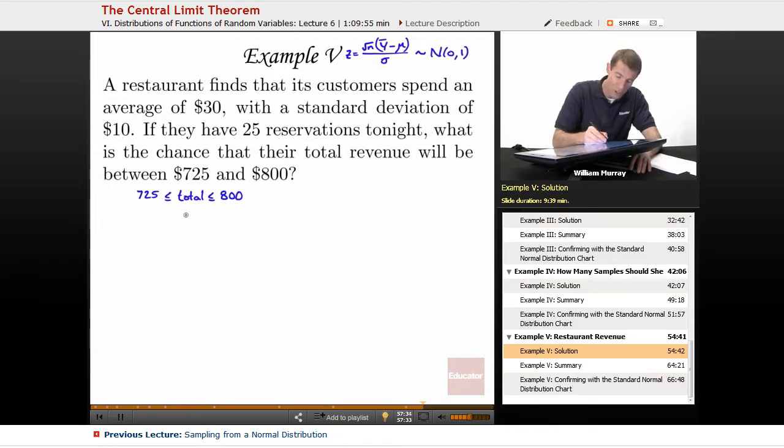So the mean, the average, Y bar would have to be between $725 divided by 25 customers and $800 over $25. I just did a little arithmetic here. $800 over $25 is $32, and $725 over $25, $700 over $25 is $28, so $725 over $25 is $29.